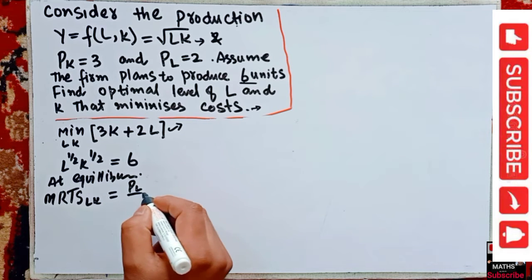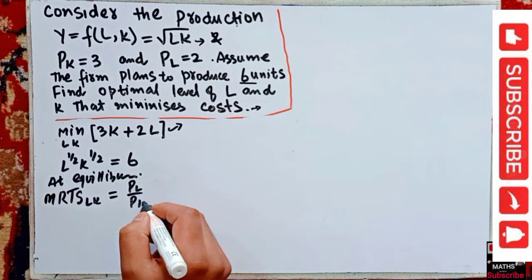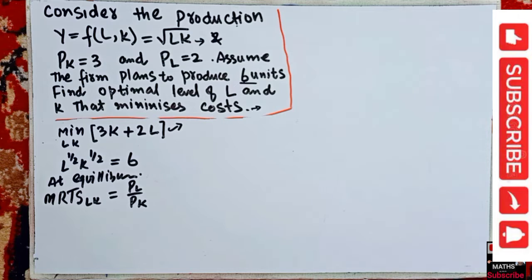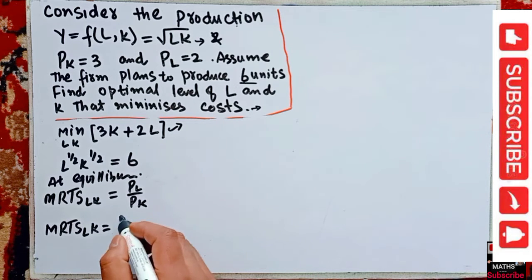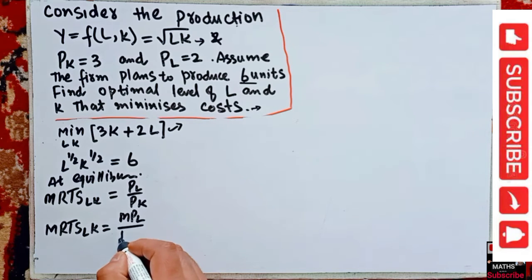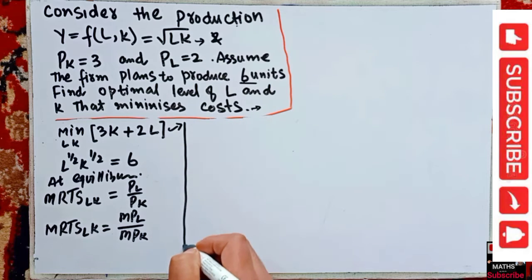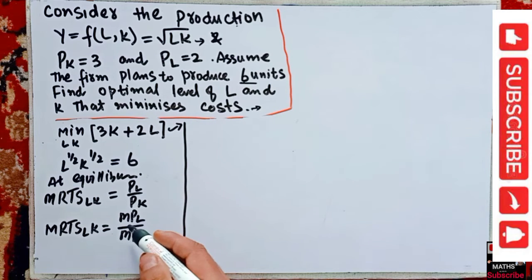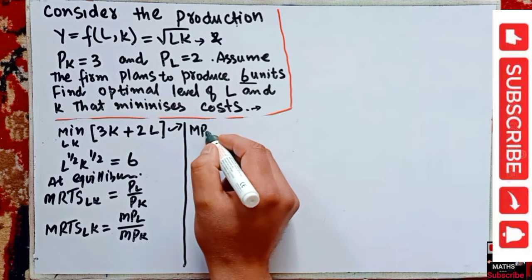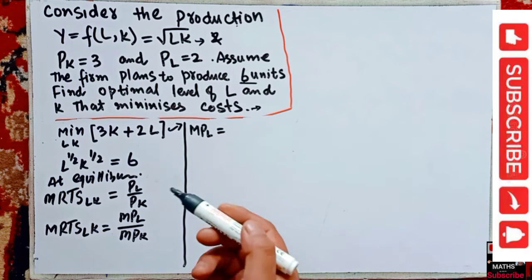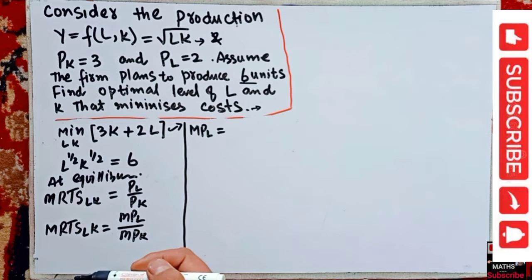Now, the marginal rate of technical substitution between labor and capital is given by the marginal productivity of labor divided by the marginal productivity of capital. So we have to first find the marginal productivity of labor and the marginal productivity of capital.